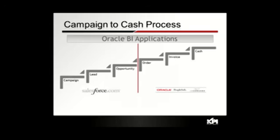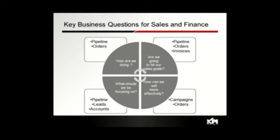From a pure sales effectiveness perspective, we see sales organizations typically asking the same four fundamental questions. The first question is: how are we doing — how's our pipeline? That question can often only be answered by looking at both pipeline and orders. The second is the forecast question: are we going to hit our sales target? Again, in many cases you need to look at not just pipeline but orders and invoices.